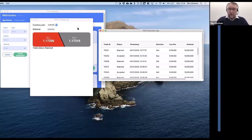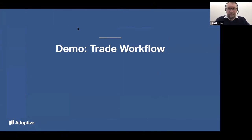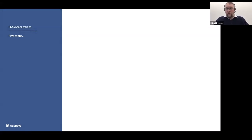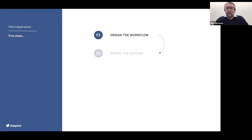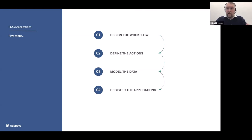To summarize, we've gone through five steps to build an FDC3 workflow. Notice how each step follows logically into the next: we design the workflow, which helps us define the actions we want to use, which determines how we model the data, then we register the applications with the types we've defined, and finally use the FDC3 APIs to make it all come together.